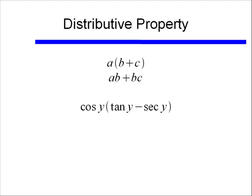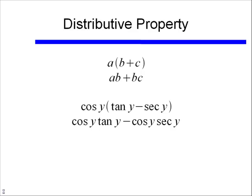If I have, for instance, cosine of y times tangent y minus secant y, what I can do is use the same distributive property and end up with cosine y tangent y minus cosine y secant y.